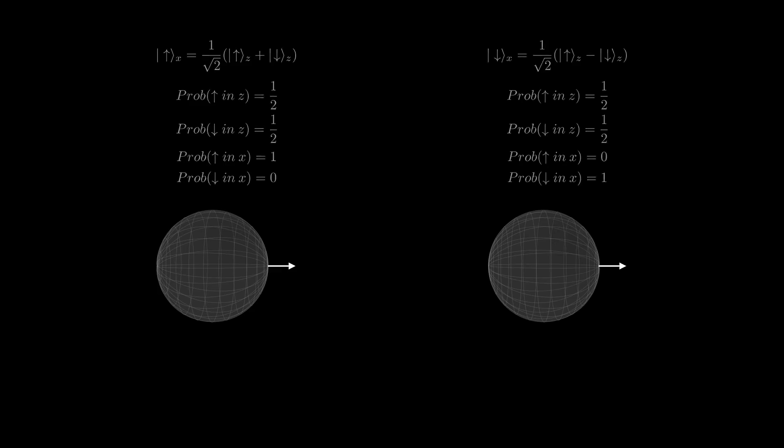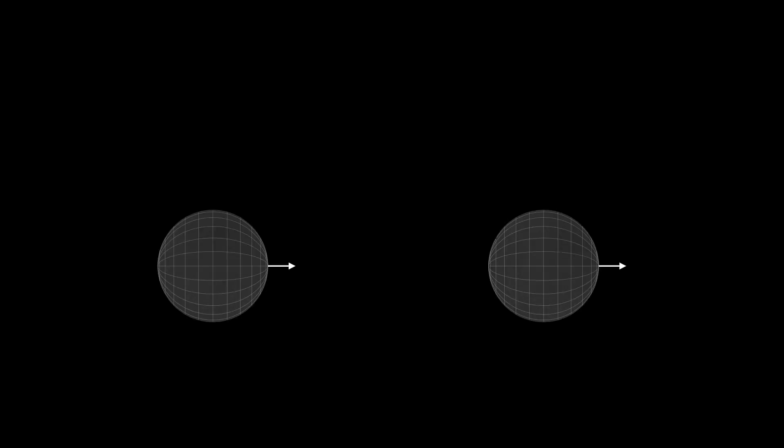And so likewise, we can also ask how to encode up and down in the Y orientation in terms of Z. And in order to do that, we can use imaginary numbers,